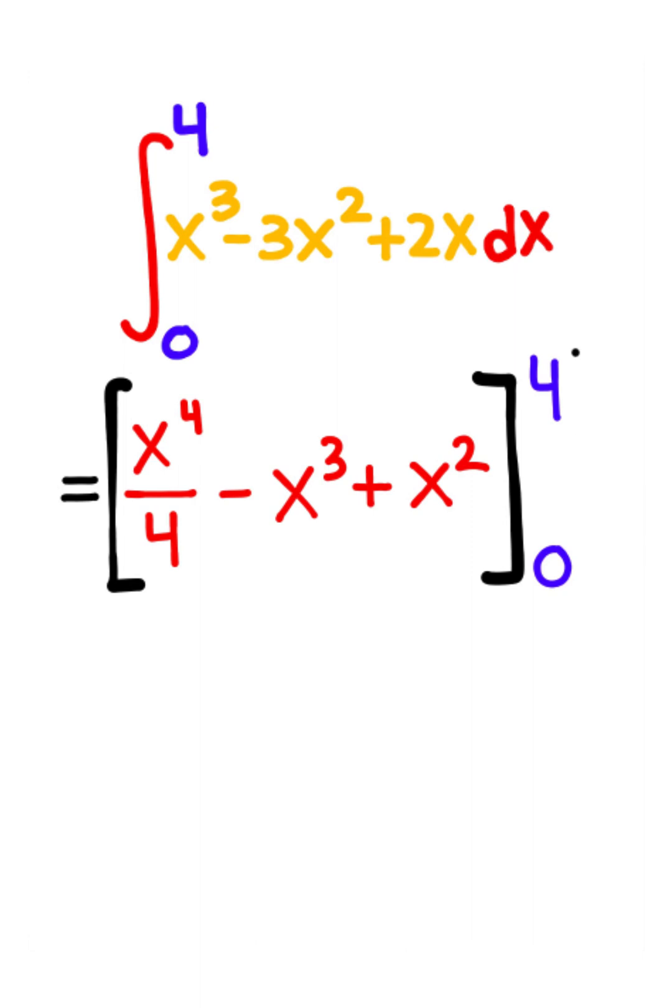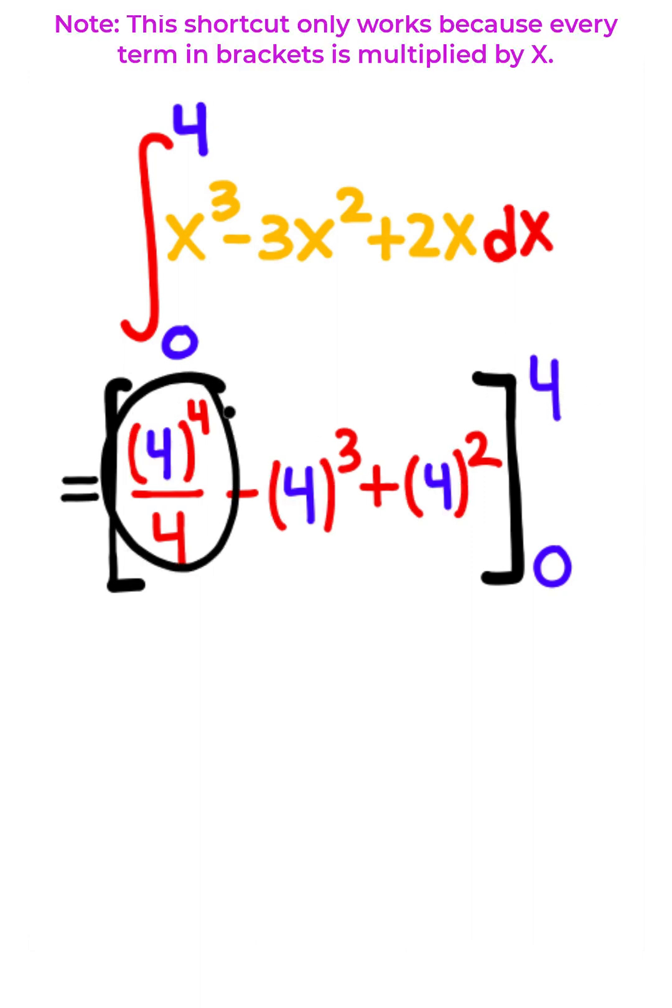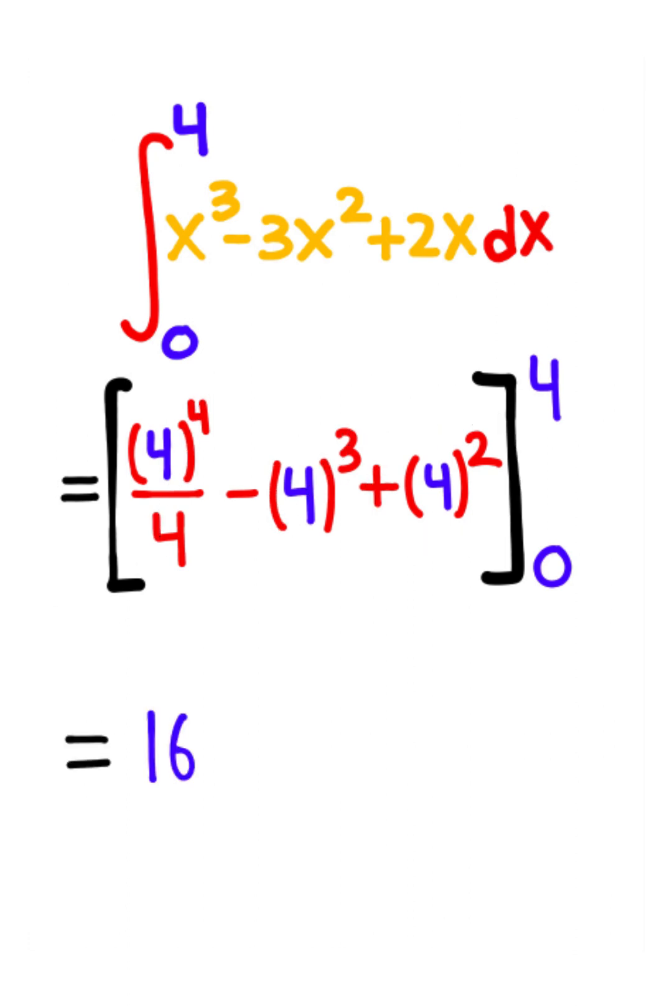So all I'm going to do is plug in the upper bound. The 4 to the fourth over 4 minus 4 cubed actually cancel each other. So all we're going to end up with is 4 squared which is equal to 16. So 16 is the answer to the problem.